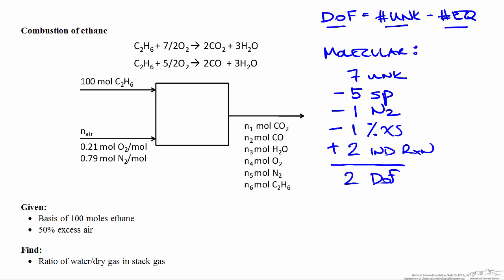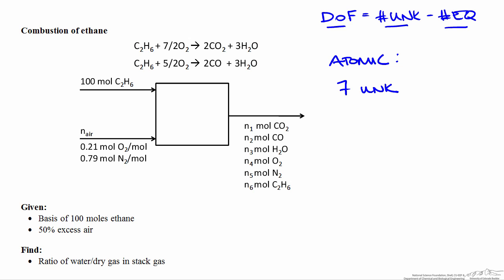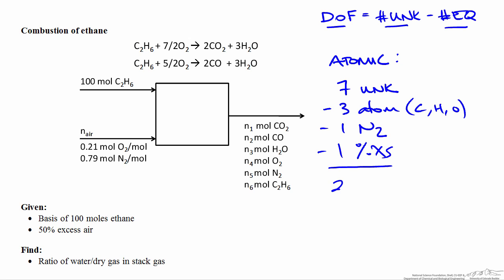Looking at the atomic species approach: we still have seven unknowns, but we can write three atomic species balances for carbon, hydrogen, and oxygen, plus an inert balance for nitrogen, plus the percent excess equation — giving five equations total. Because atomic species are conserved, there are no extents of reaction to account for. This also yields two degrees of freedom, confirming that either way we need two more pieces of information to find the ratio of water to dry gas in the reactor output.